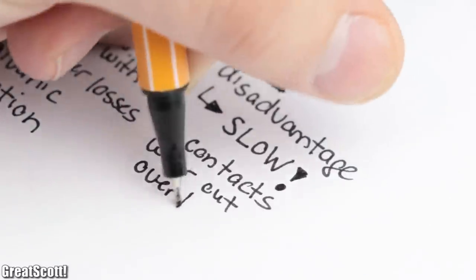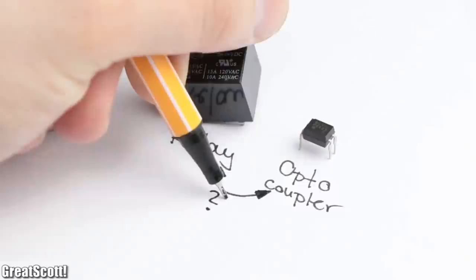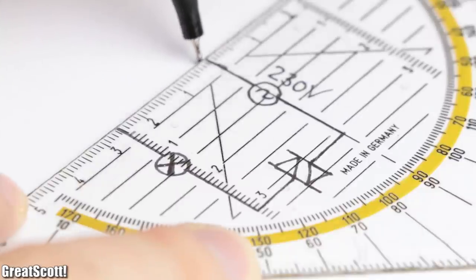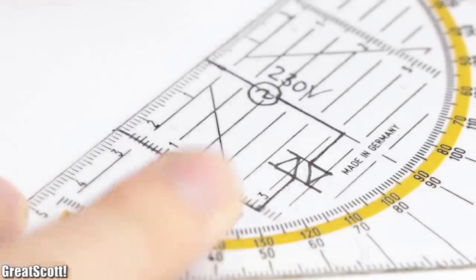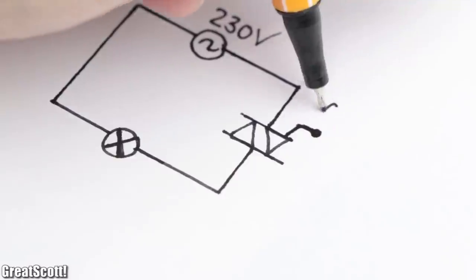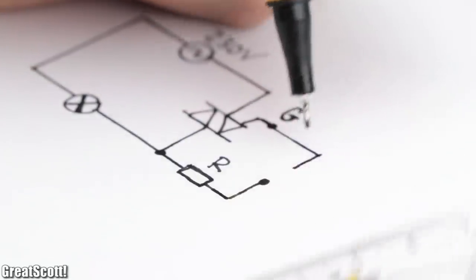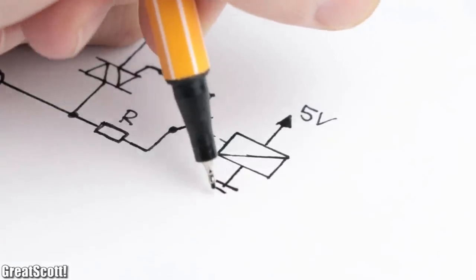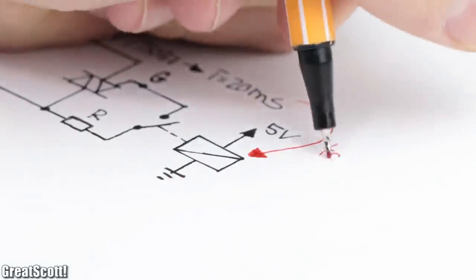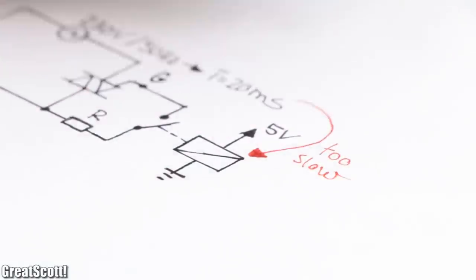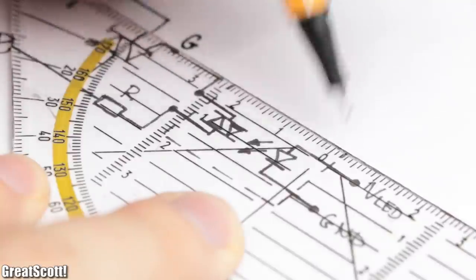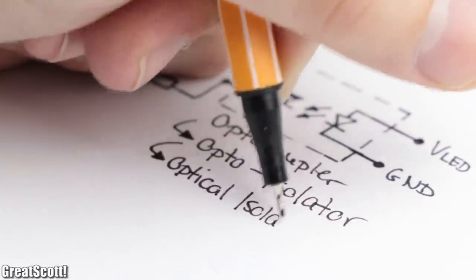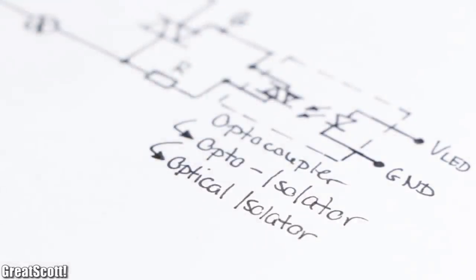But what about the optocoupler I talked about earlier? For that, let's go back to the TRIAC switch AC circuit. To power its gate and thus turn on the TRIAC, we need a switch that connects the AC voltage to it. A relay would in this example not work, since we want to control the phase angle at a frequency of 50 Hertz. Instead, we could use an optocoupler, which is also known as an opto isolator, which should make its function a bit more clear. On the inside, it consists of an infrared LED and a photosensitive sensor, which is nowadays mostly a transistor or a TRIAC.